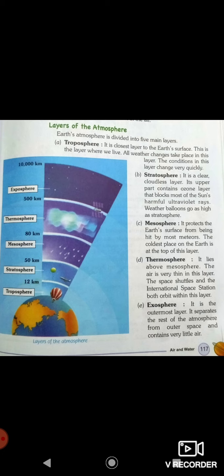Next is mesosphere. It protects the earth's surface from being hit by most meteorites. The coldest place on earth is at the top of this layer. Earth's coldest part is the top of this layer.